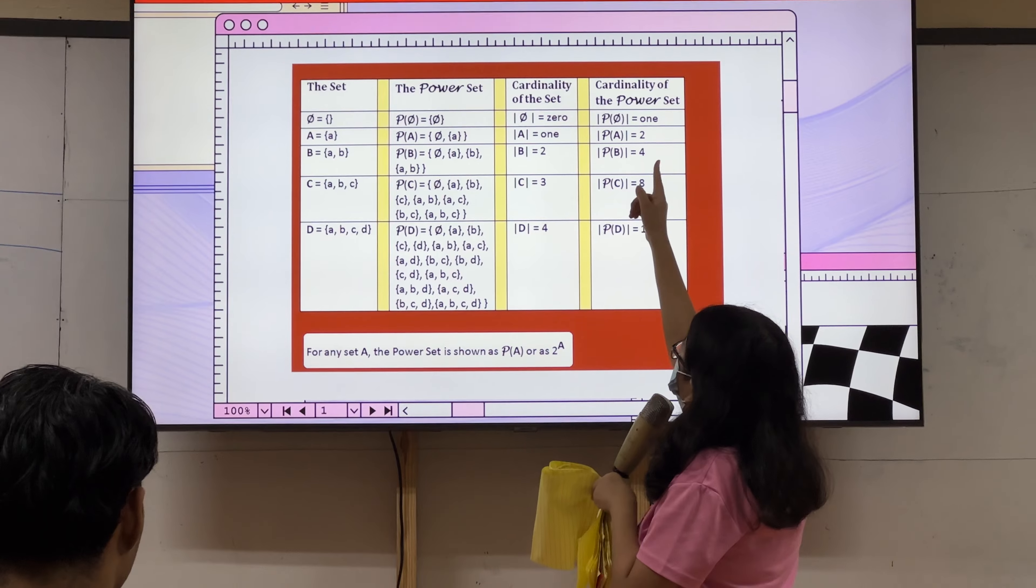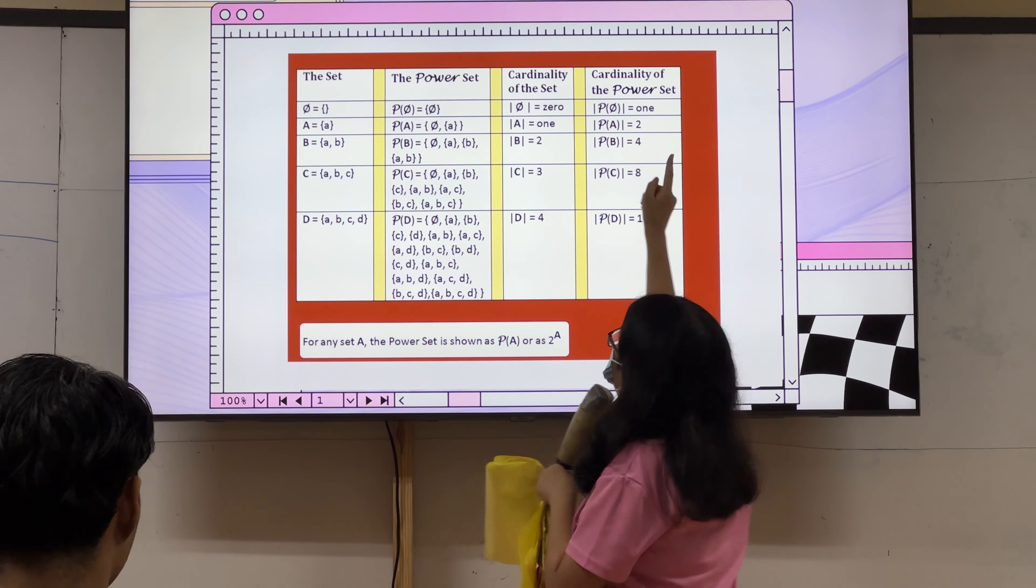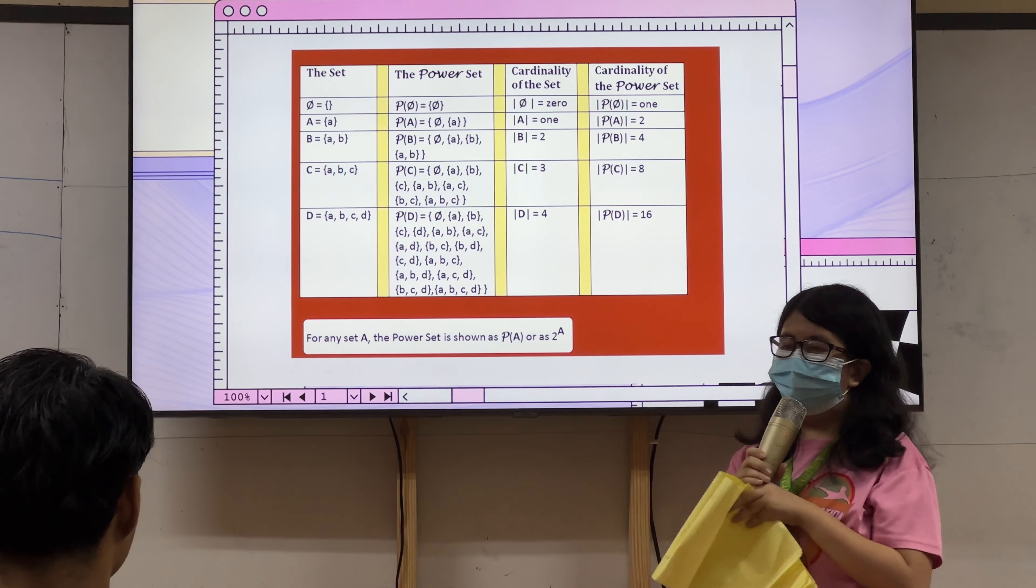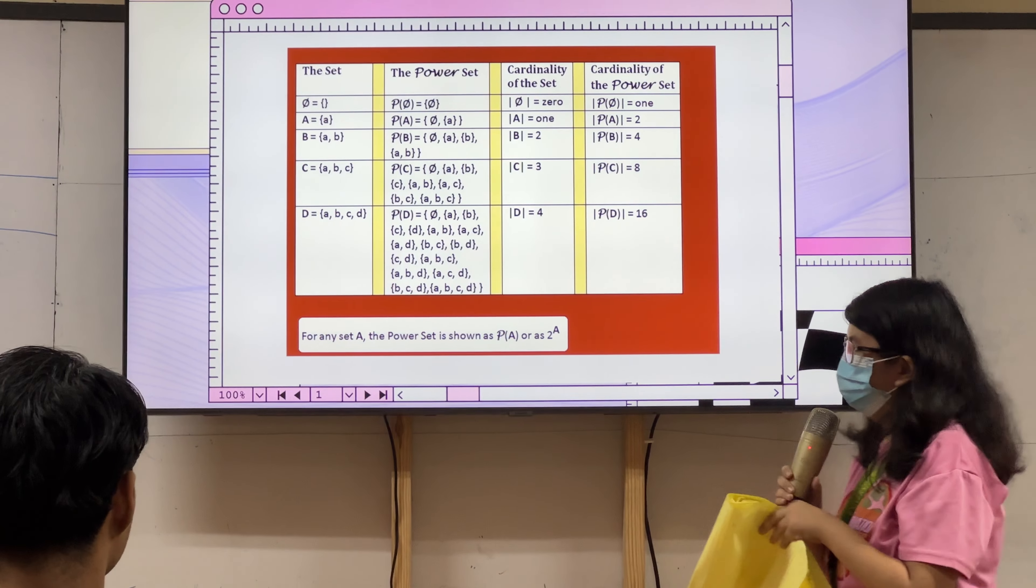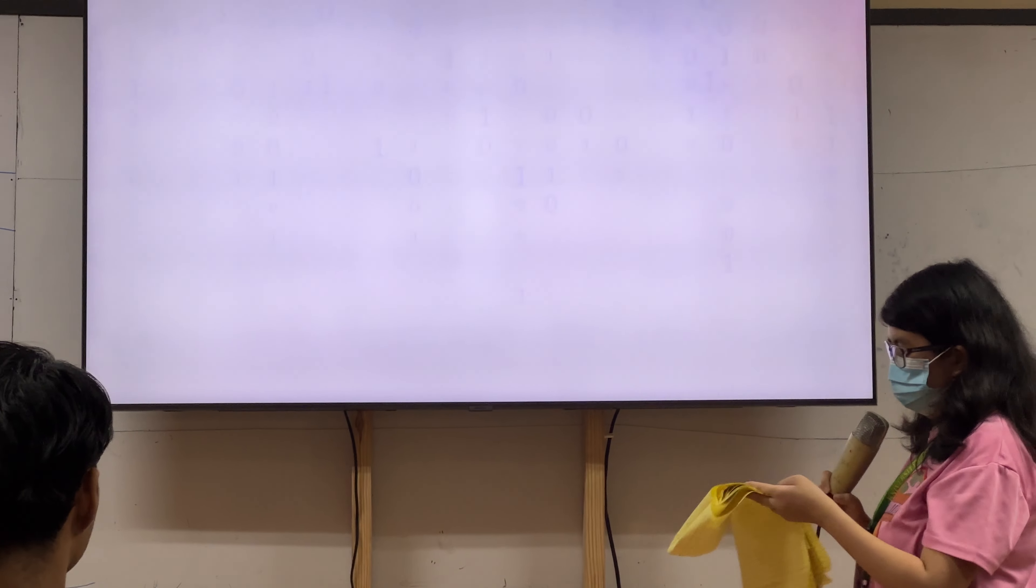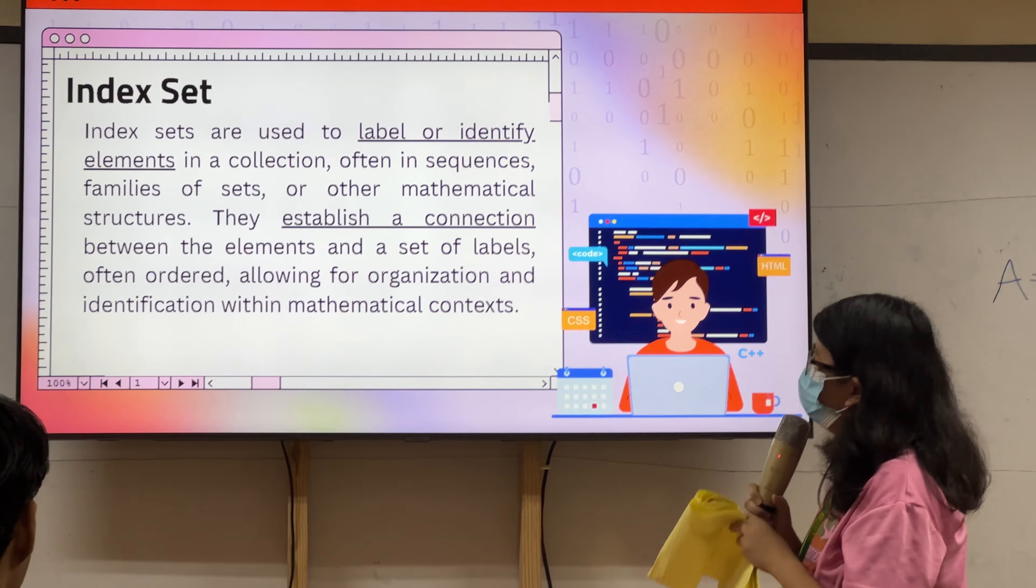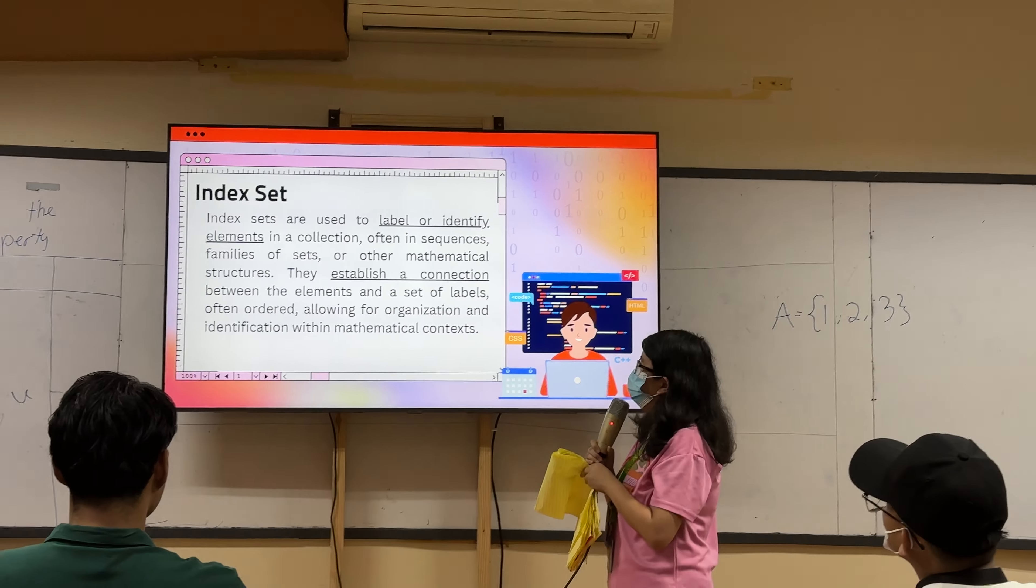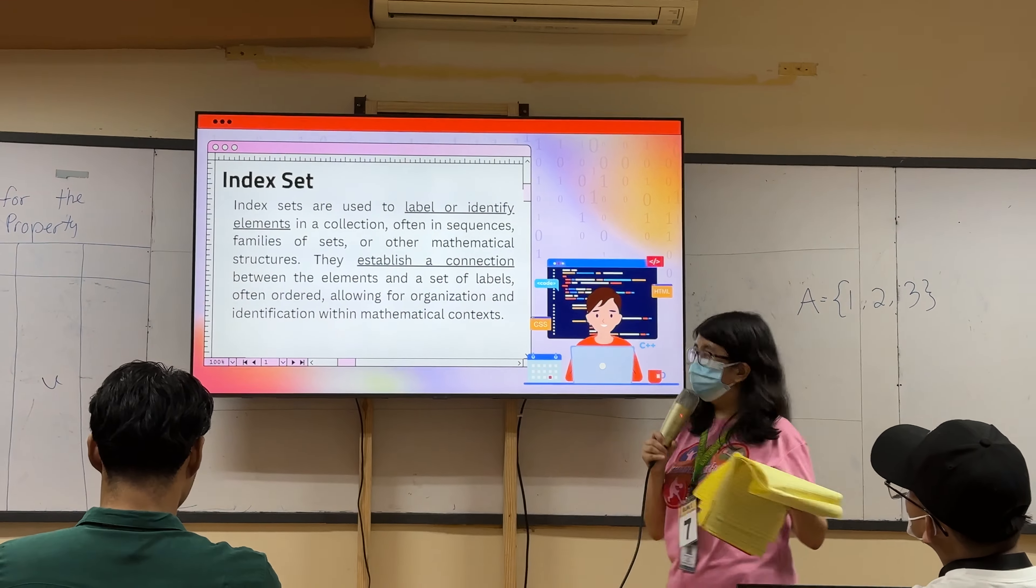Pero sa cardinality of the power set, pag-solve ani, kay 2 to the power of n. And since duharag elements ani, so 2 to the power of 2, atong cardinality of the power set, sa aning na set, kay 4. Nakaget silang? Yes.